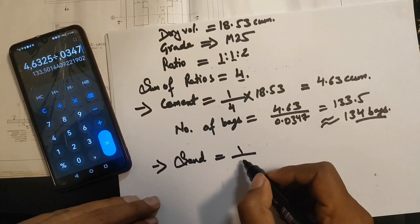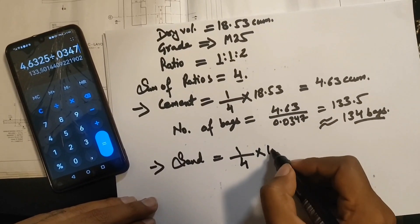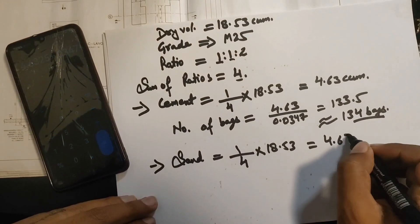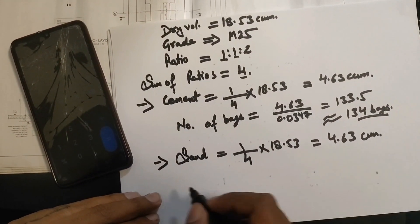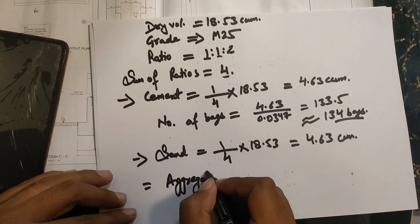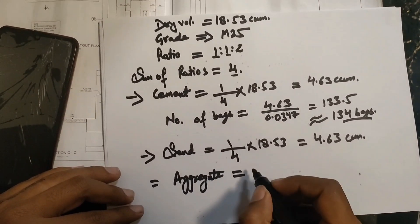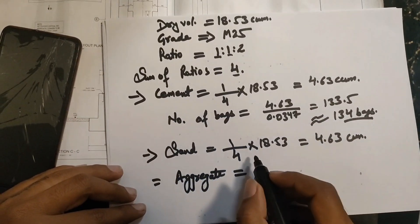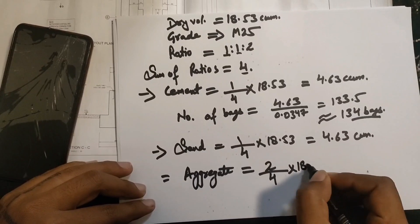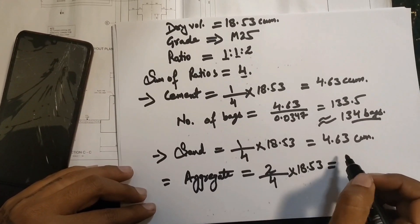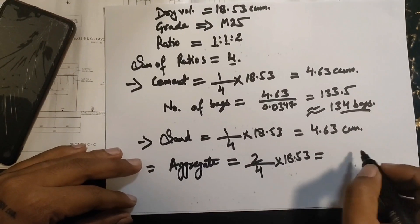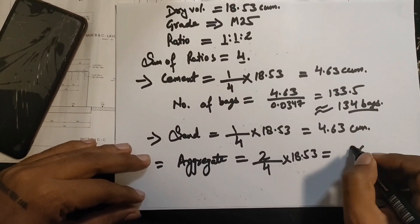For sand above FFL: ratio 1/4 × 18.53 = 4.63 cubic meters. For aggregate: ratio 2/4 × 18.53 = 9.26 cubic meters. This completes the individual calculations for above FFL level.